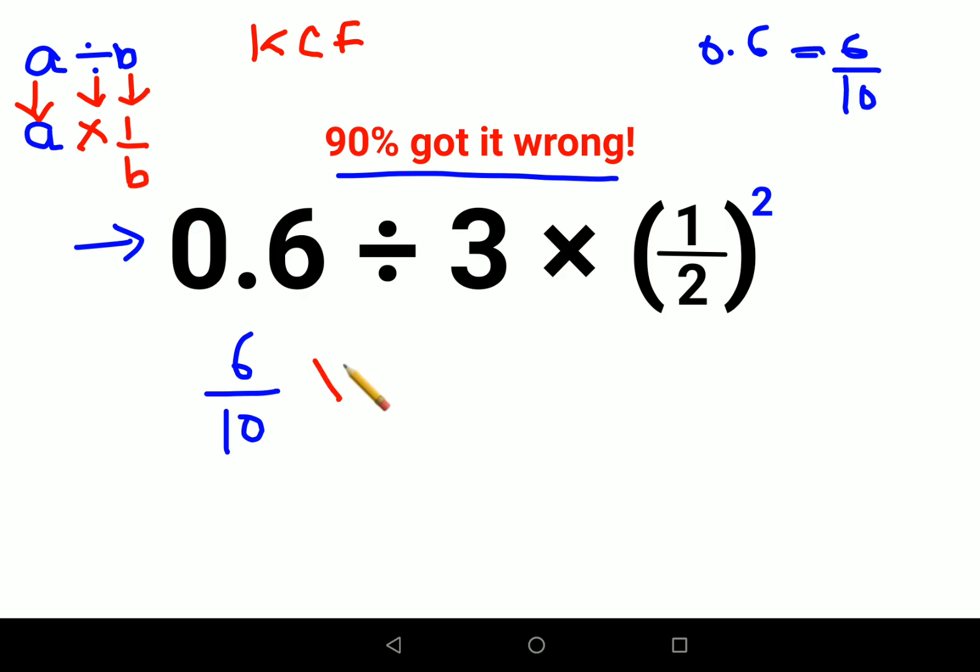So here this will become 6 upon 10 into 1 upon 3 into 1 upon 2 the whole square, that becomes 1 upon 4.